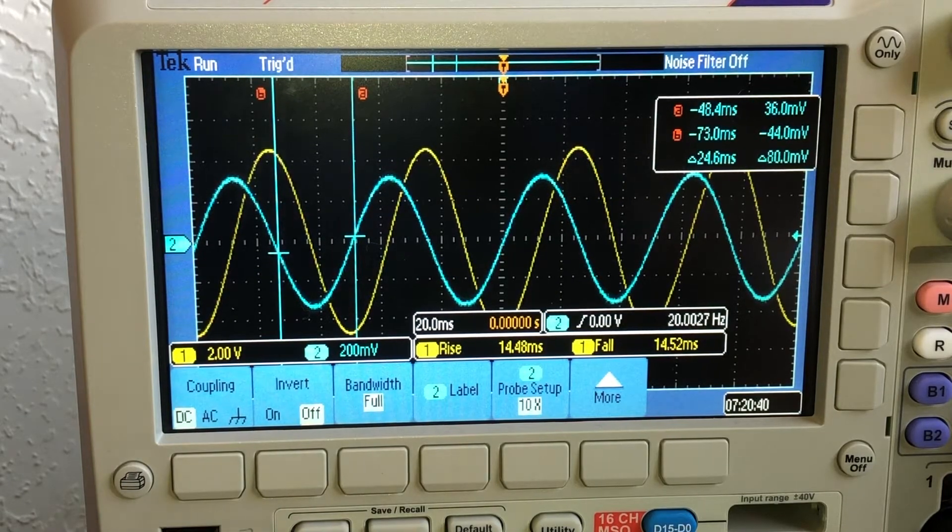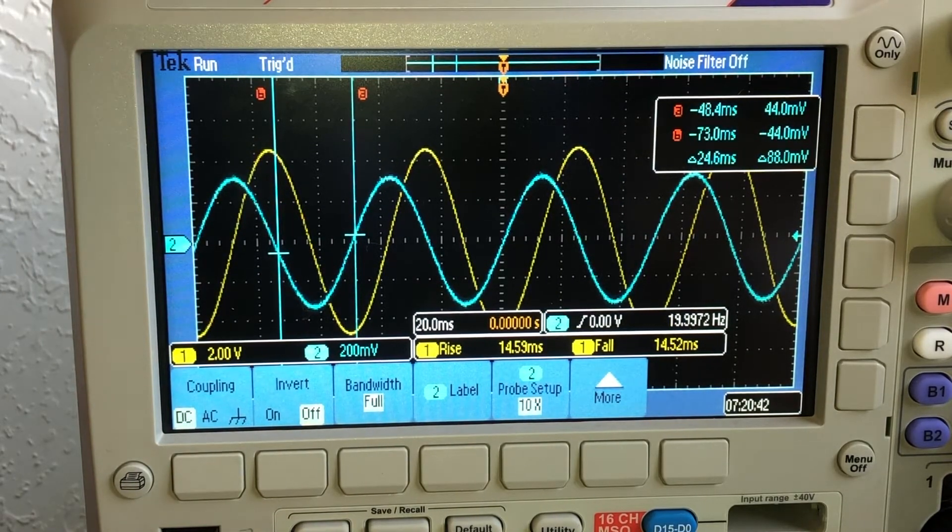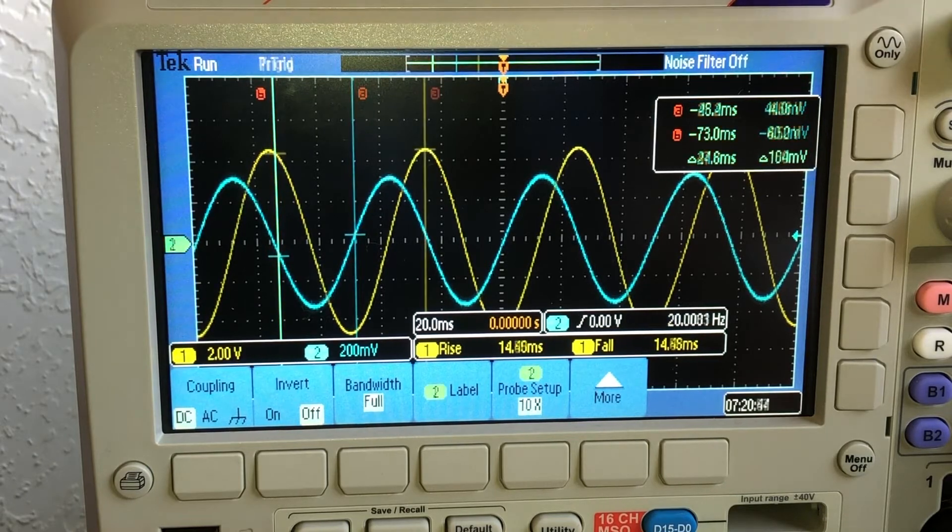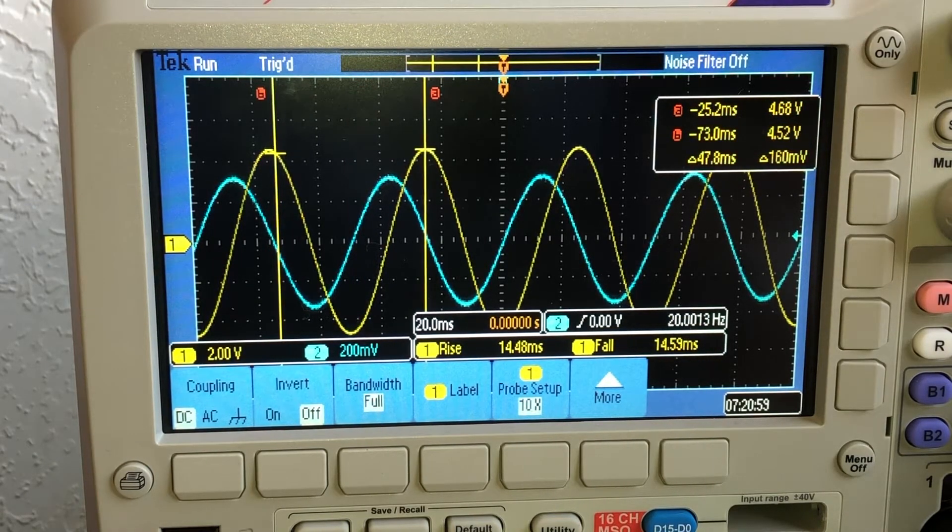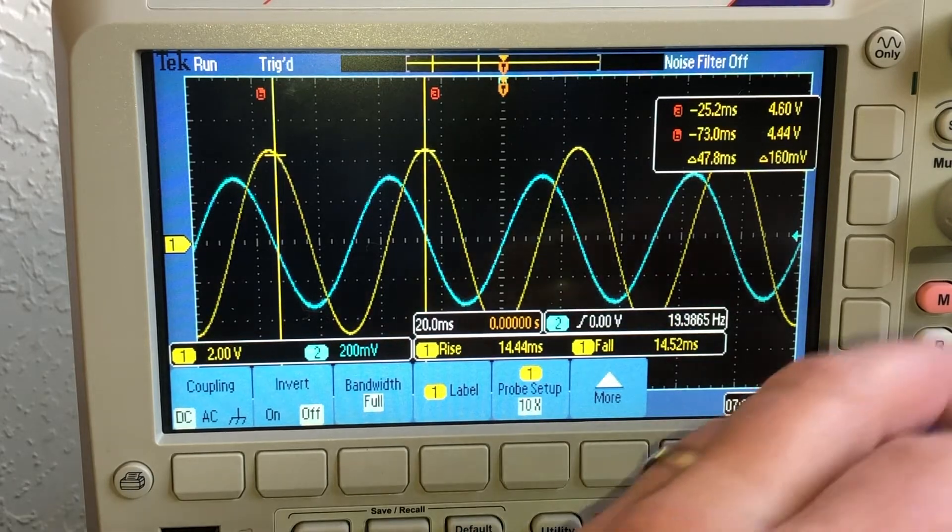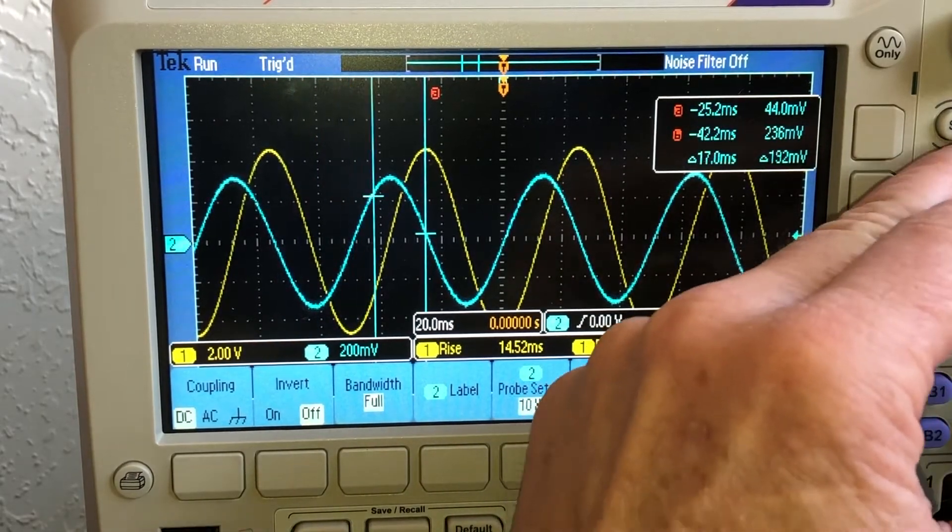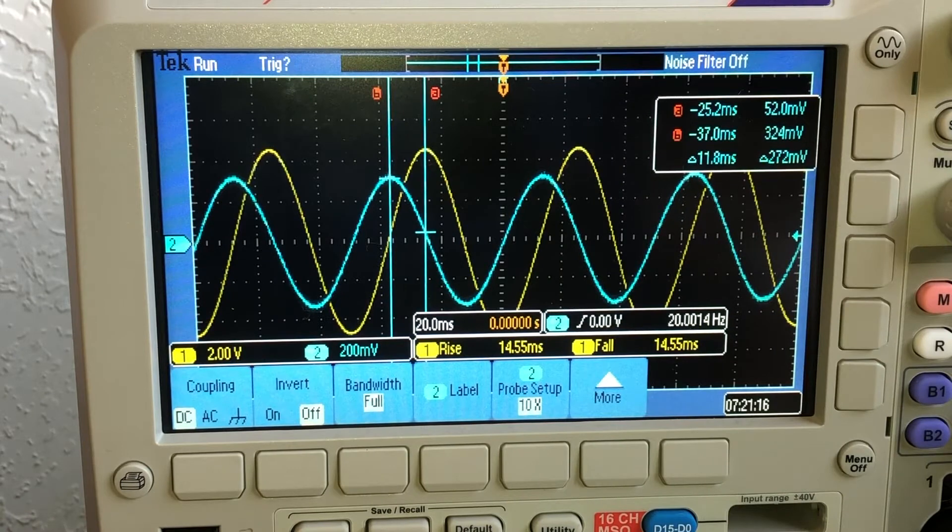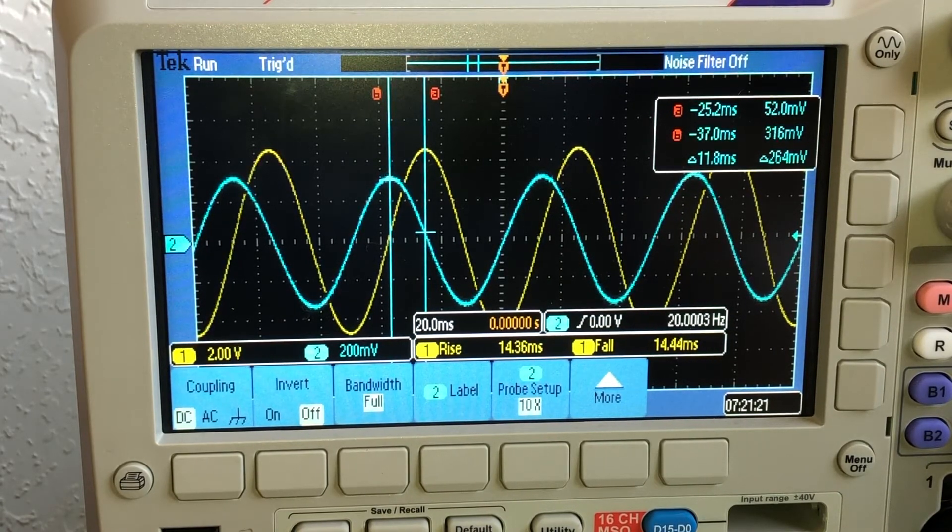So this is 20 Hz. You can already see there's a significant increase here, so the voltage at the peak is 4.68 volts, and the peak across the resistor is 330 millivolts.